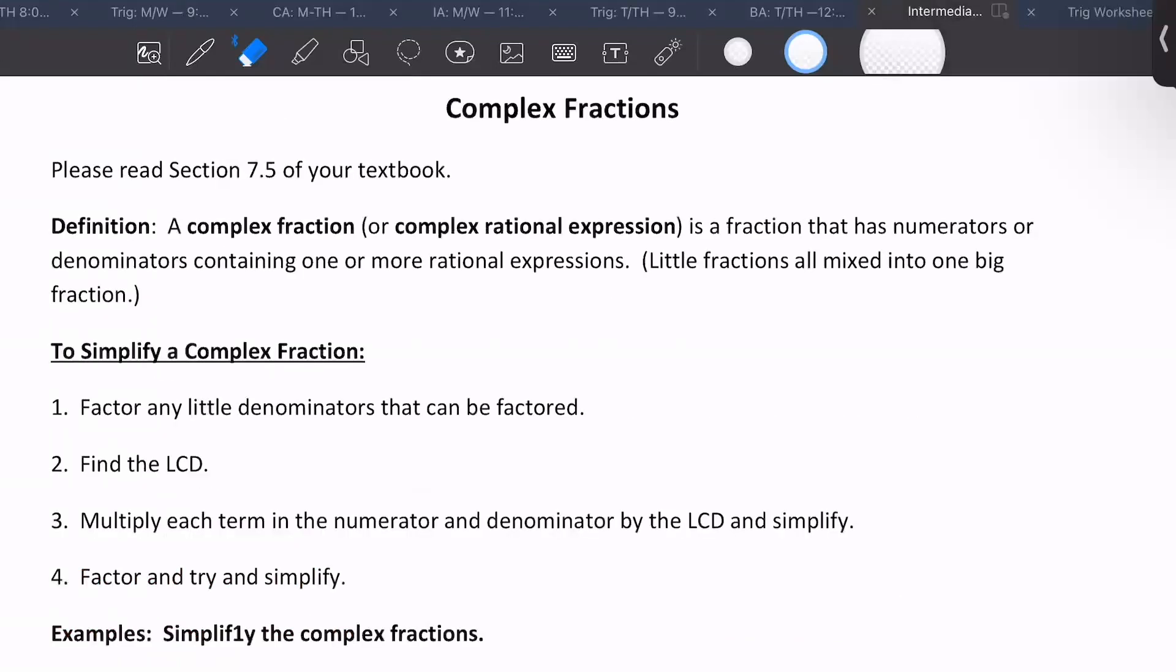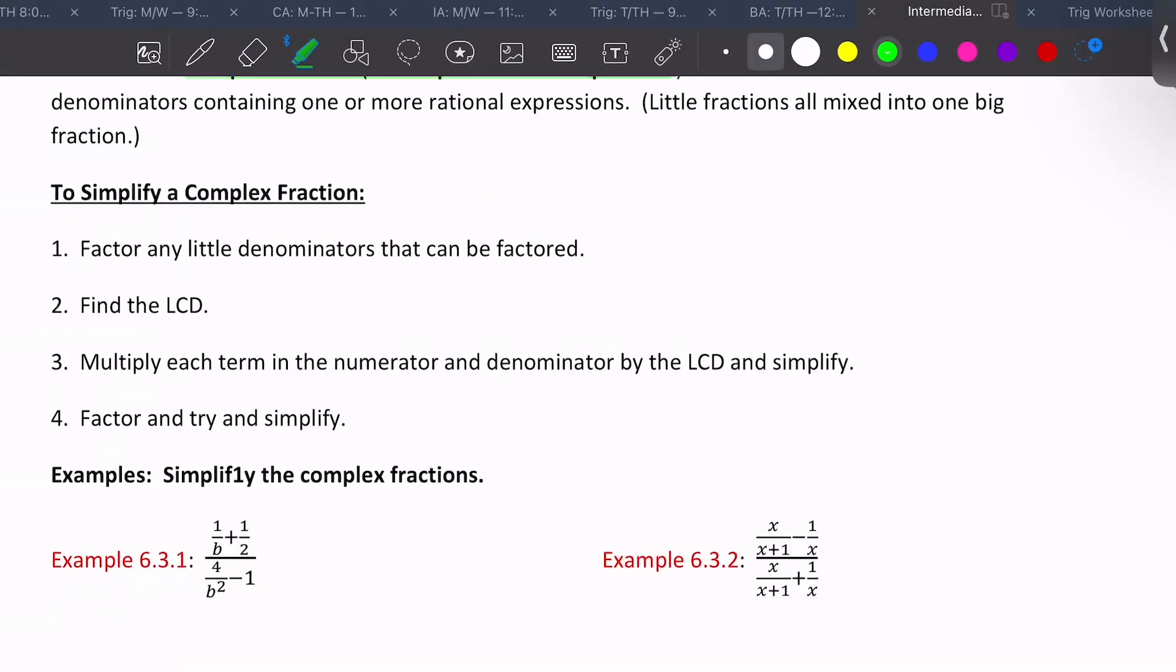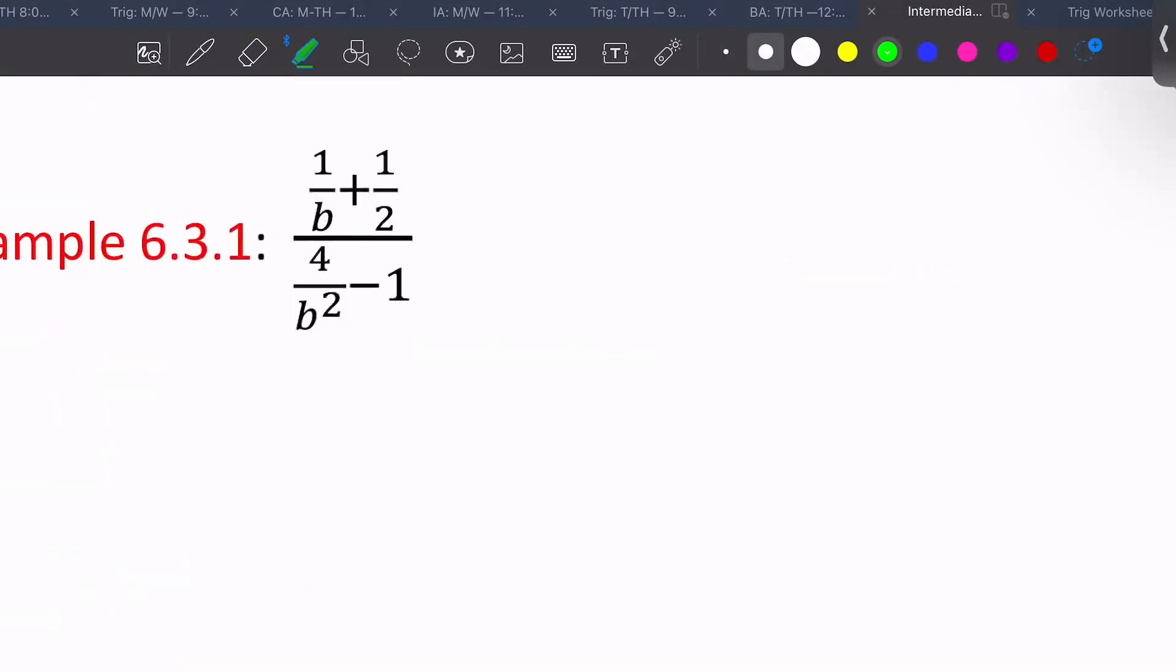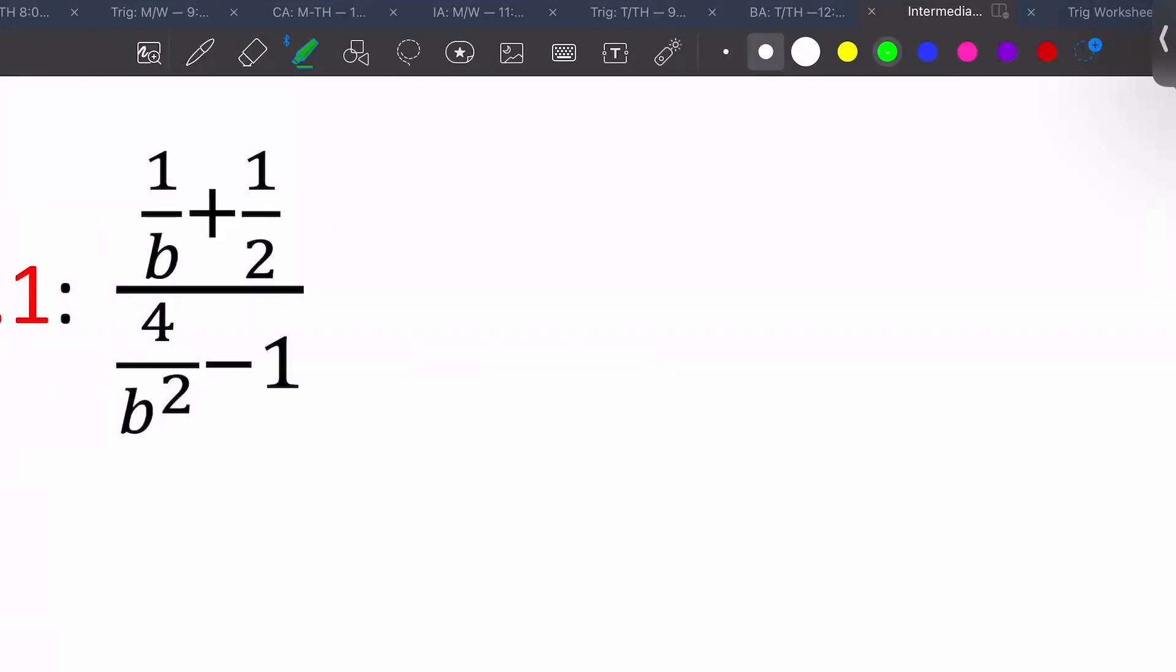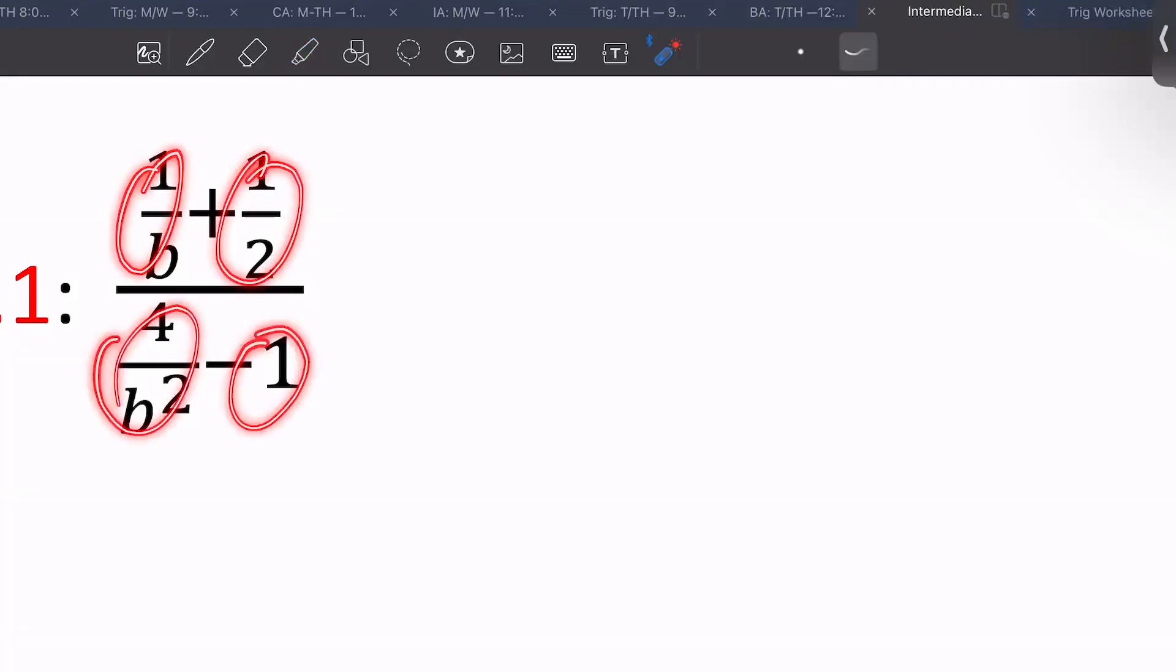So this is section 7.5 of your textbook, it's on complex fractions. What a complex fraction is, is a fraction that has numerators or denominators containing one or more rational expressions. So it's little fractions all mixed up into one big fraction. The way that we're gonna do these is we're gonna multiply each term, so each little fraction by the least common denominator.